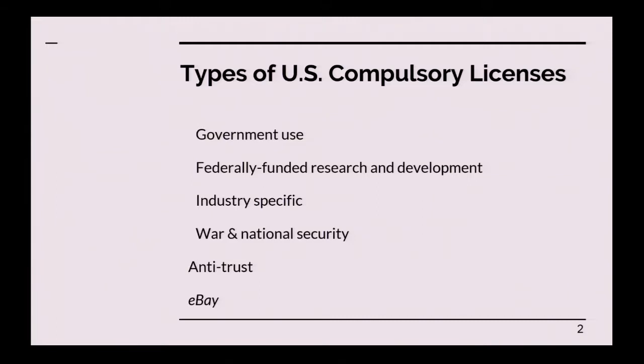The reasons that people have proposed compulsory licensing statutes in the past are broad. In the early 1900s, there were compulsory licensing statutes and bills proposed in terms of the non-use of patents and competition. People were worried that patented inventions weren't being manufactured in the United States or processes weren't being used. There were competition issues related to cross-licensing and patent pooling, in the context of the 1883 Paris Convention, which was a broader patent agreement that included provisions on compulsory licensing.